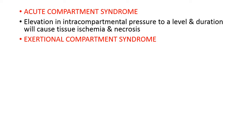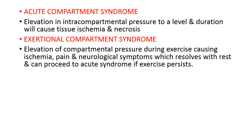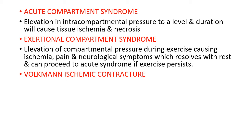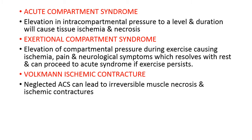Chronic exertional compartment syndrome, which can be acute and chronic, is associated mostly with exercise and leads to similar symptoms of ischemia, pain, and neurological symptoms that usually resolve with rest. However, if the triggering exercise continues, it can lead to acute compartment syndrome. Volkmann's ischemic contracture is a sequelae of untreated acute compartment syndrome, usually seen in the forearm but can also be seen elsewhere.